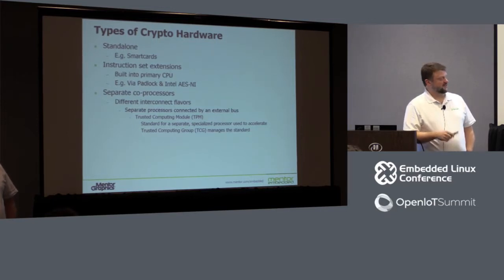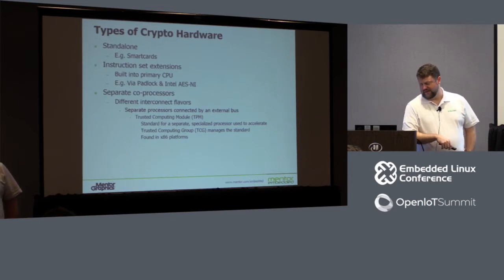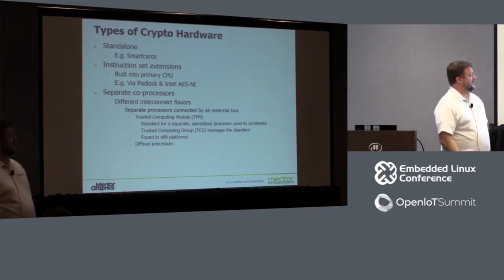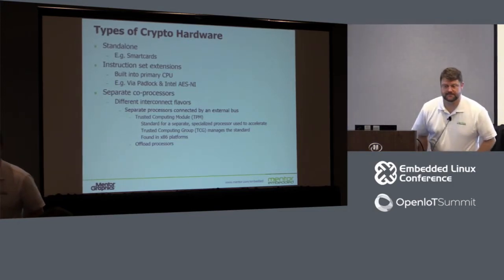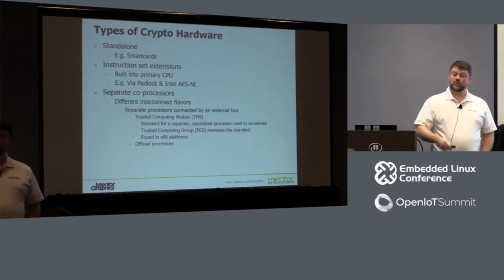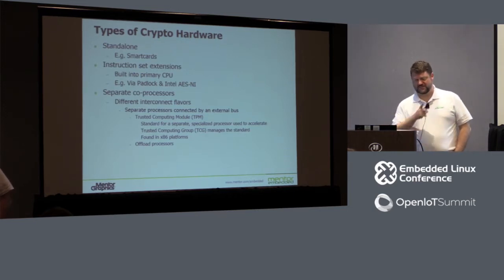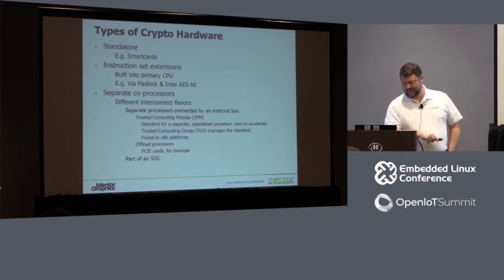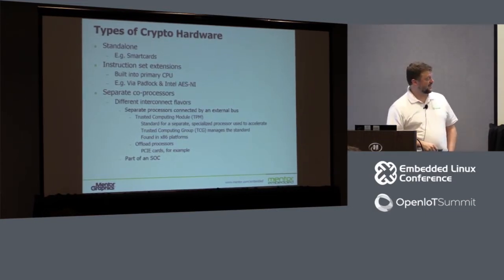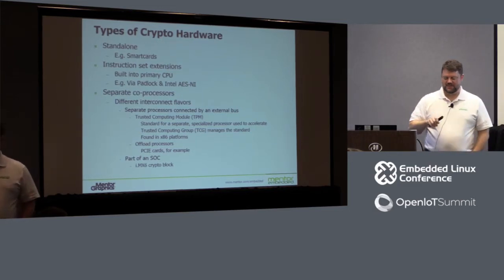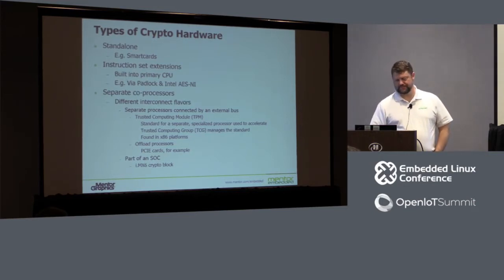There are some TPM modules available for ARM but the general feedback is they're more trouble on the board. There was a question about ARM TrustZone — that's a slightly different animal. It does work well with this, and the IMX6 does have TrustZone, but it's beyond the scope of what I'm covering here. The most interesting case for this presentation is that the IMX6 has a crypto block built into the SoC — it's on the die, inside the package, so for all practical purposes we consider it a single device.